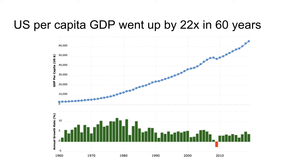The student asks a clarifying question: if total GDP fell, wouldn't per capita GDP also fall? The tutor confirms — per capita accounts for population, so if both output and population double, per capita stays the same. They also notice the 2009 crash is visible as a dip in the chart, and note 2020 may show a small blip too.